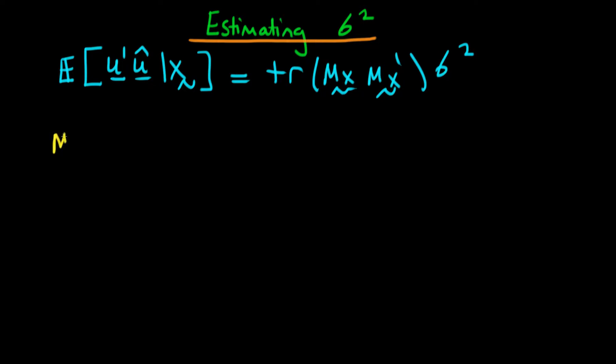Let's just remind ourselves of what mx is. mx is equal to the identity matrix minus the orthogonal projection matrix onto the column space of x, which we call px.